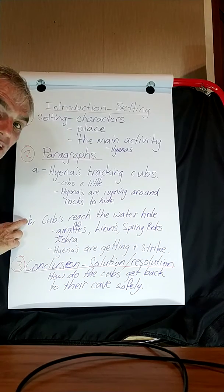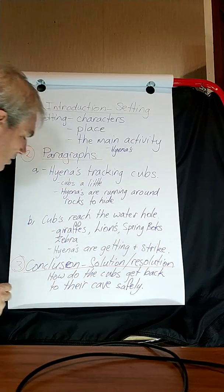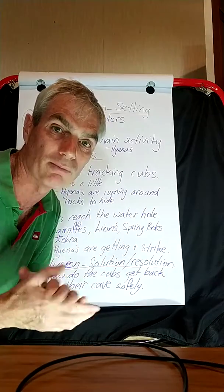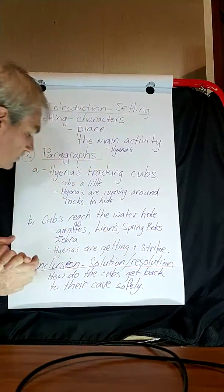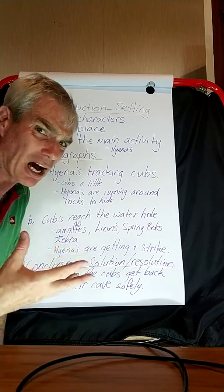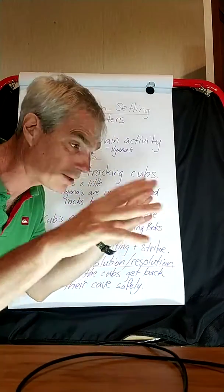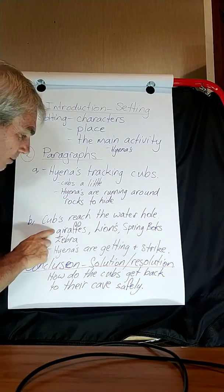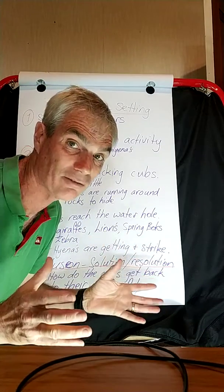Then you might get to the next part of the story where you've got the big main problem. In Lily's story, her big main problem was that the cubs needed to go and drink at the waterhole. So the cubs reached the waterhole. There might be a lot of activity there — it might be quite a big waterhole. There might be all sorts of animals drinking: giraffes, lions, springboks, zebra. There could even be some elephants there.